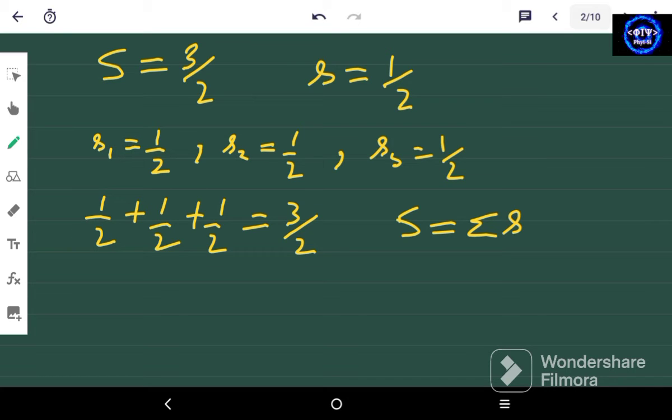It is not actually the summation of s, but you know the value goes from, if we have 2 electrons, the value goes from s1 minus s2 to s1 plus s2. So if we have 3 electrons, then we will have this value of 3/2. That is the maximum value that we can get by adding these spins.